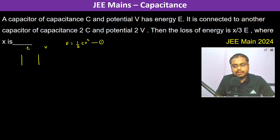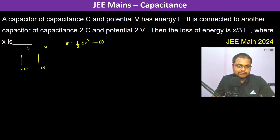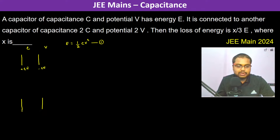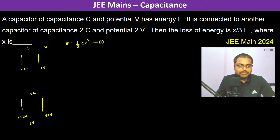The charge on this capacitor is plus CV and minus CV. It is then connected to another capacitor whose capacitance is 2C and potential is 2V, so the charge on that capacitor is plus 4CV and minus 4CV.